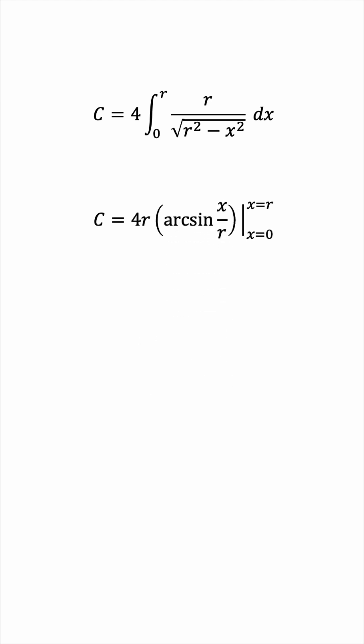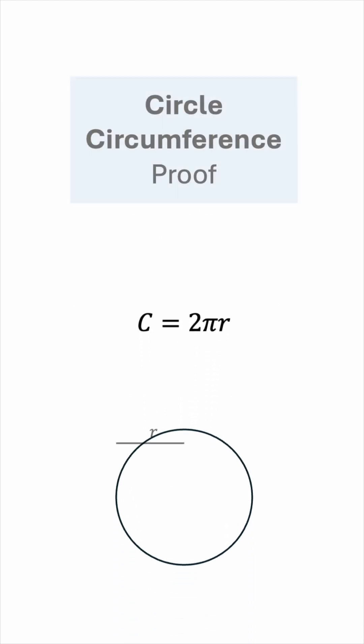We'll get arc sine of r over r minus arc sine of 0 over r. This is arc sine of 1 minus arc sine of 0, which is pi over 2 minus 0, and this works out to be 2 pi r. So, there you have it.